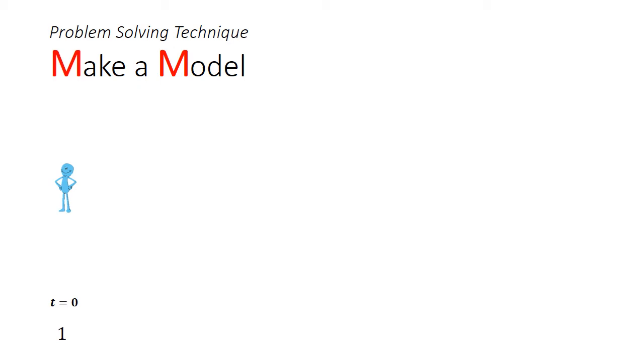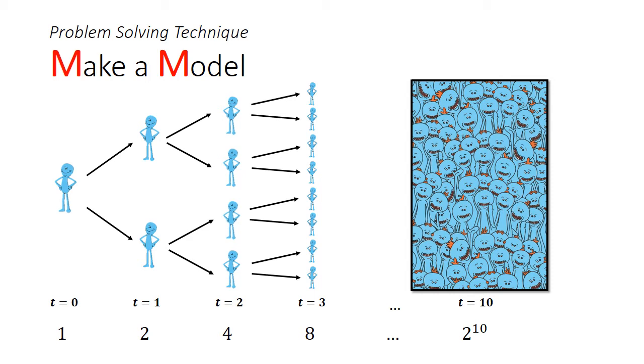Let's go through the thinking process for this problem. We can start by making a model. Initially at t equals 0, we have exactly 1 Meeseeks. At t equals 1, he makes 2 more Meeseeks, so now we have 1 plus 2, which is 3 Meeseeks. At t equals 2, the 2 new Meeseeks now make 4 more Meeseeks, so now we have 7 Meeseeks. This pattern continues until we reach t equals 10,